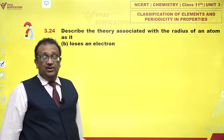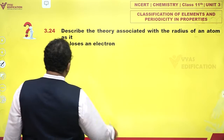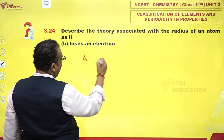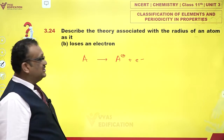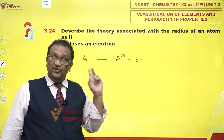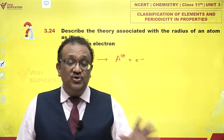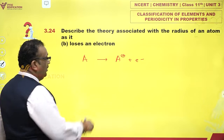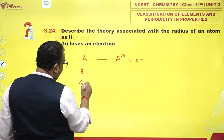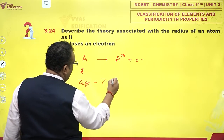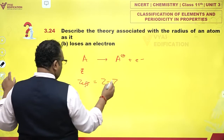When an atom loses an electron, the first two points are the same: the nuclear charge remains the same, there is no change in the nucleus. But since an electron is lost, we look at Z_effective, which is Z minus S — where S is also called the screening constant.